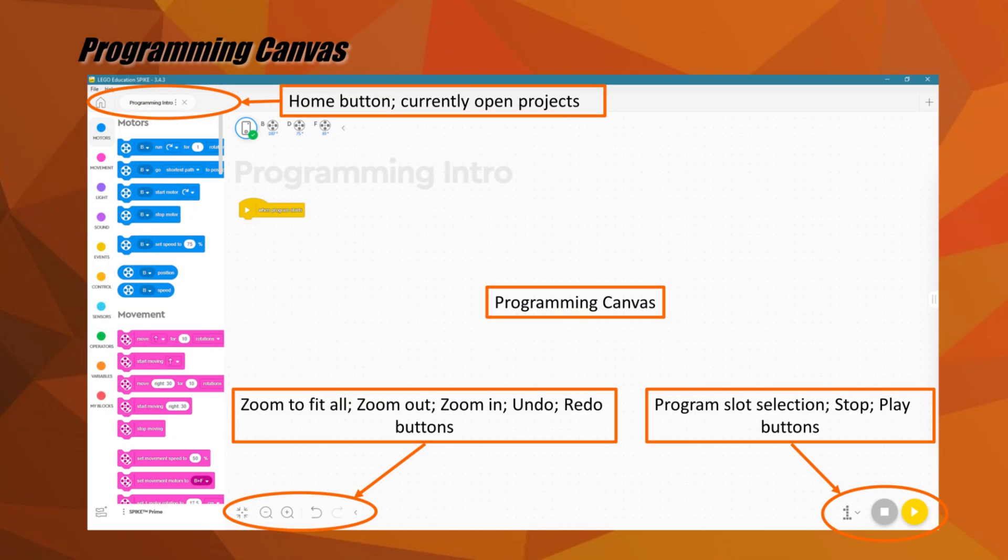Let's take a closer look at the programming canvas. In the top left corner, you have the home button to return to the home page. And you can see any projects that are currently open as individual tabs. On the bottom left of the programming canvas, you have buttons to adjust the zoom level as well as undo and redo buttons. On the bottom right, you can select which program you want to work on. From here, you can also start and stop programs.